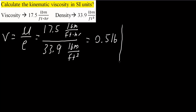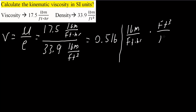Now we focus on the units. We have pound mass divided by feet times hour, divided by pound mass divided by feet cubed. Flipping the denominator, that becomes pound mass per feet times hour, multiplied by feet cubed per pound mass. Pound mass cancels, and feet cubed over feet gives feet squared per hour.